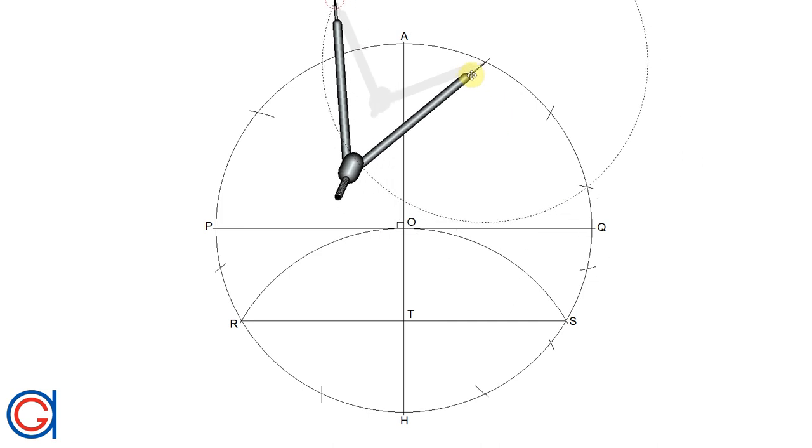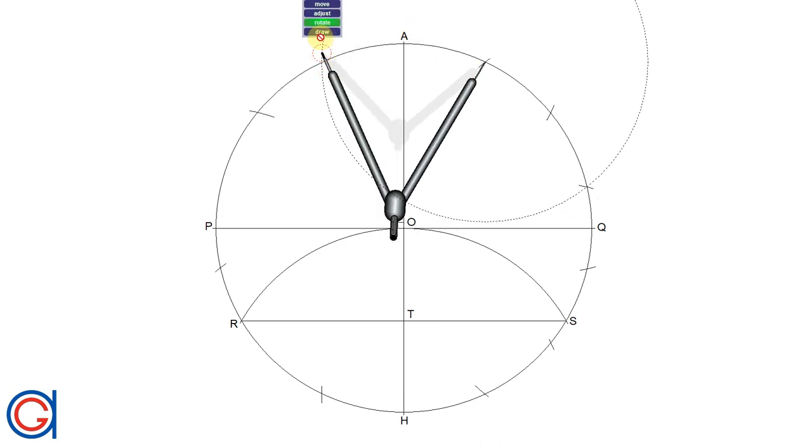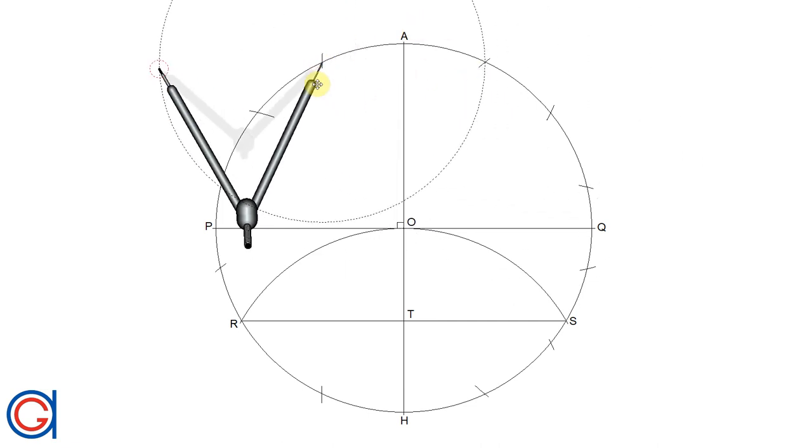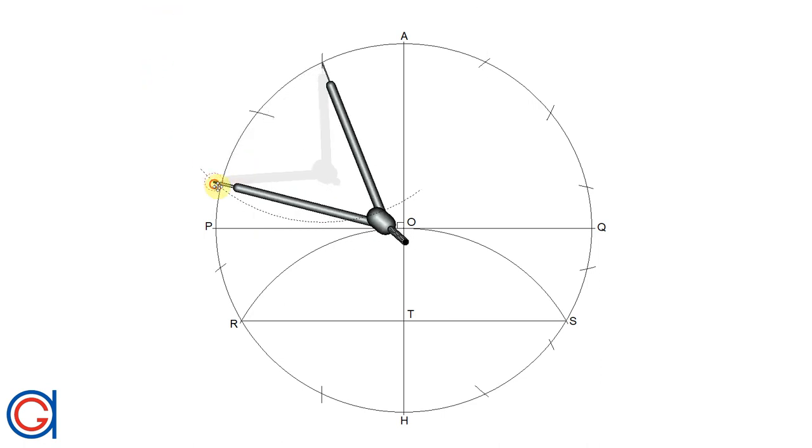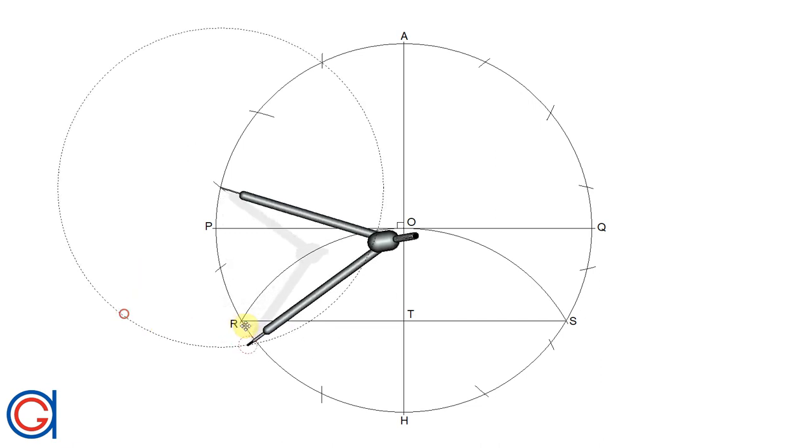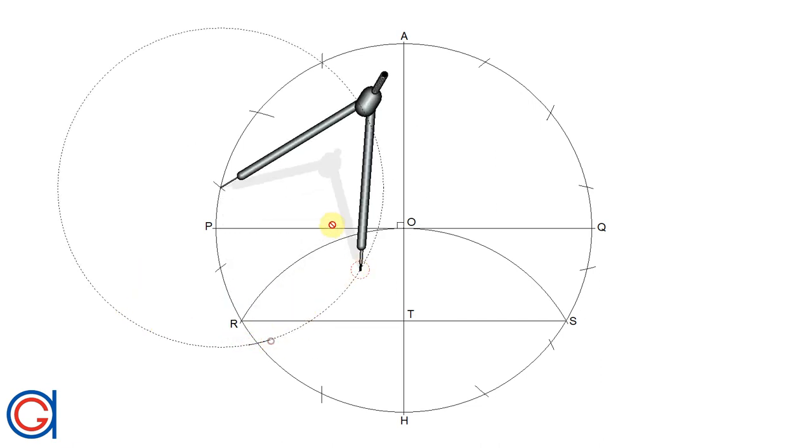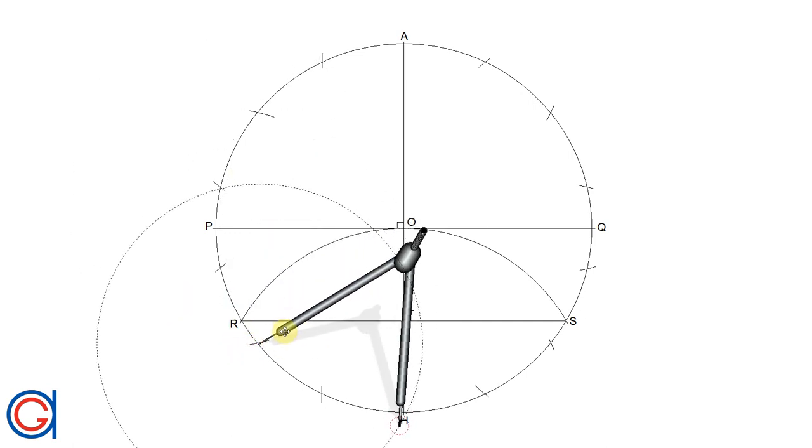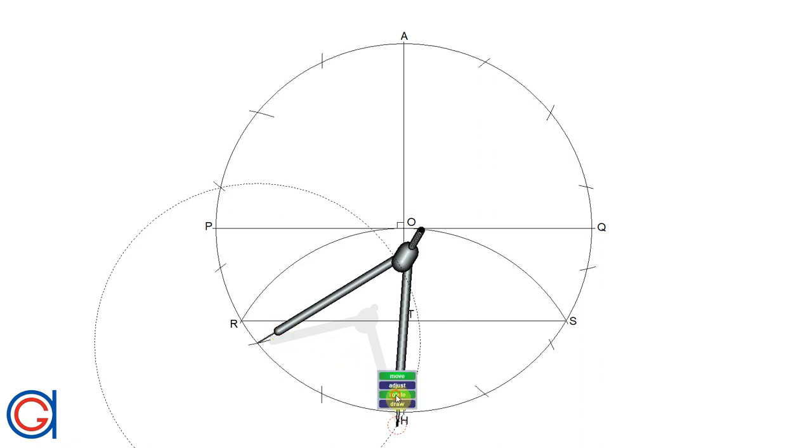This will divide now our outer circumference into 14 equal parts which we want. And again if we have been working with accuracy our last division should cut exactly on point H as can be seen here.